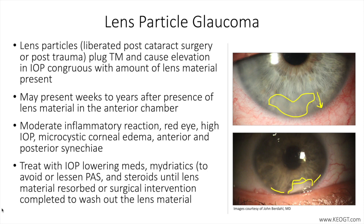From a treatment standpoint, fortunately many of the patients who suffer from lens particle glaucoma do not actually manifest optic neuropathy if the disease is identified in early stages and prompt definitive treatment is instituted. Treatment is carried out with IOP-lowering medications, mydriatics to avoid or lessen formation of synechia, and steroids until the lens material is resorbed or surgical intervention is completed to wash out the lens material. The surgical treatment involves anterior chamber washout with removal of all lens material from the anterior chamber.